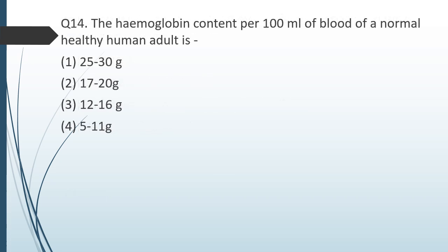Question number fourteen: hemoglobin content per 100 ml of blood of a normal healthy human adult is? The correct answer is 12 to 16 grams. Interestingly, something else is also in this range: the normal respiratory rate is 12 to 16 breaths per minute.